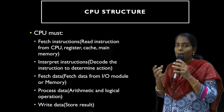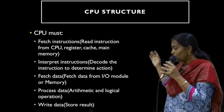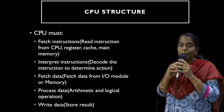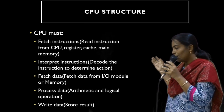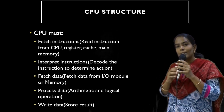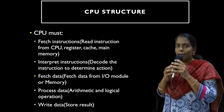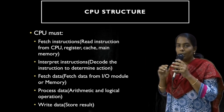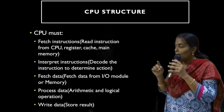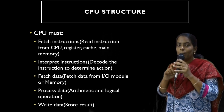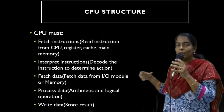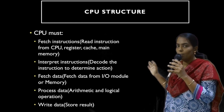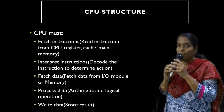The processor fetches data either from the input/output module or from the memory. The next functionality is processing the data, where the CPU performs an arithmetic or logical operation. The last operation is writing data — after processing, the results are stored in the memory. These are the main functions of the CPU.